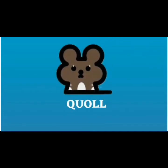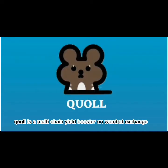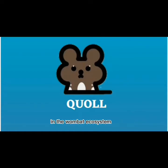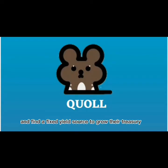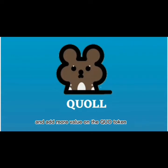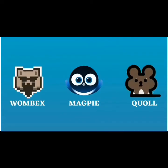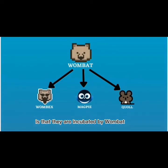Quo is a multi-chain yield booster on Wombat Exchange that maximizes user experience and benefits in the Wombat ecosystem. It will invest in new projects and find a fixed yield source to grow their treasury and add more value on the QUO token. These are very unique projects, but what they have in common is that they are incubated by Wombat.